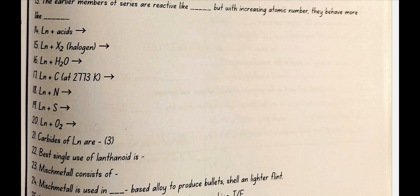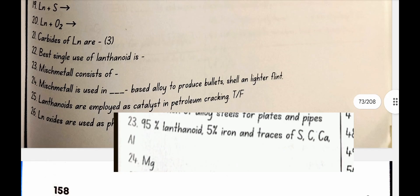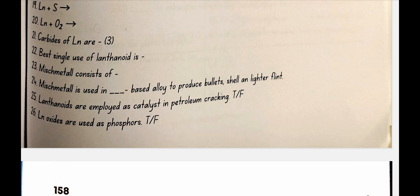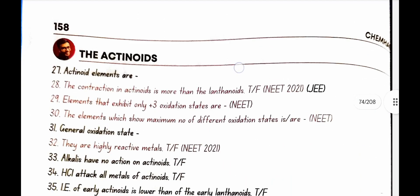Best single use of lanthanoid is production of alloys steels for plates and pipes. Misch metal consists of 95 percent lanthanoid, 5 percent iron and traces of S, C, calcium or aluminium. Misch metal is used in magnesium based alloy to produce bullets, shell and lighter flint. Lanthanoids are employed as catalyst in petroleum cracking. Yes true. Lanthanoid oxides are used as phosphors. Yes true.